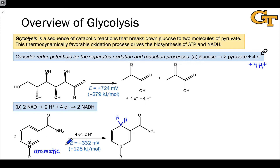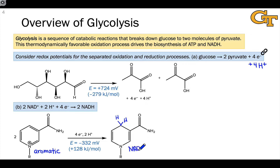For the two molecules of NAD+, the reduction potential is negative 332 millivolts, and that corresponds to a delta G under standard conditions of about 128 kilojoules per mole. So this is a disfavored process, but NADH is a great reducing agent. It's advantageous from an energetic perspective for a biochemical system to generate this molecule so that it can reduce other molecules.